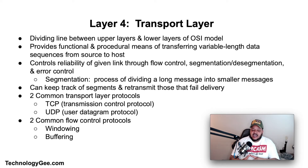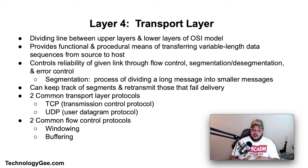Layer four is the Transport Layer. The transport layer acts as the dividing line between the upper layers and the lower layers of the OSI model. It provides the functionality and procedural means of transferring variable-length data sequences from a source to a destination host while maintaining quality of service. The transport layer controls the reliability of a given link through flow control, segmentation, desegmentation, and error control. Some protocols are state and connection-oriented, meaning the transport layer can keep track of segments and retransmit those that fail delivery.